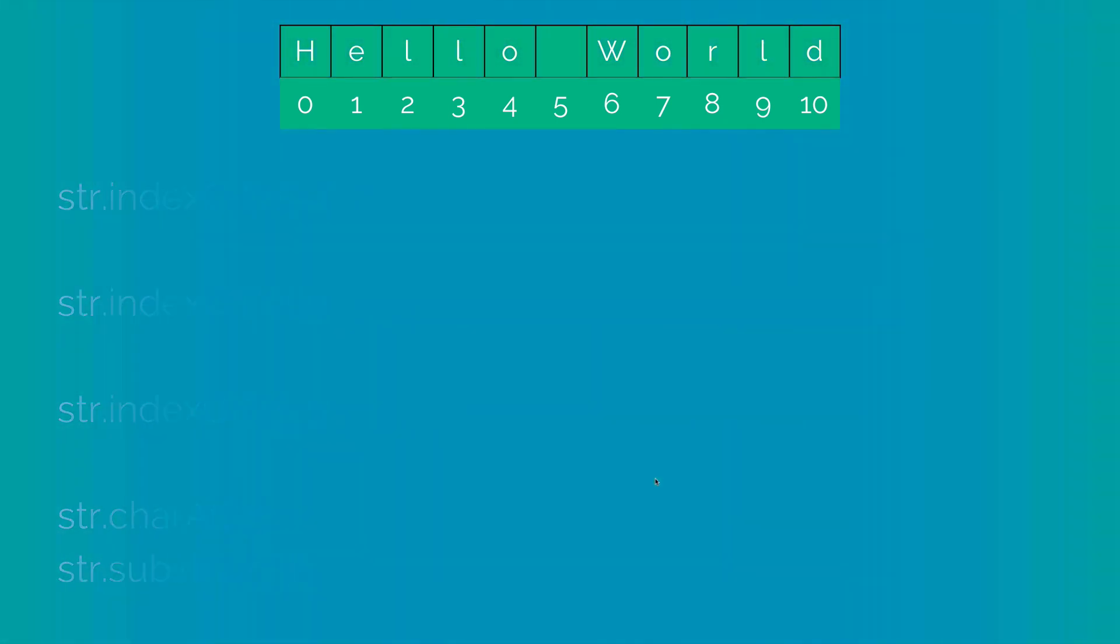Now let's take a look at some more methods. Here I can use the same substring method and I can tell a start and end. So I start at 3 and I end at 9. But notice that the last position is not included. It gives me lo space wor.